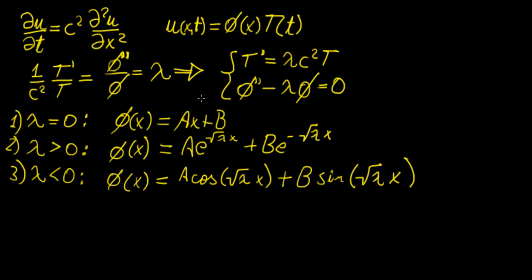We talked about how for the equation involving the second derivative of the function phi, we needed to consider three different cases with respect to the value of the eigenvalue lambda, because so far we don't know whether it's going to be zero, greater than zero, or less than zero. So we need to consider three possible solutions, and in this video we're going to apply some boundary conditions that will allow us to solve this equation.